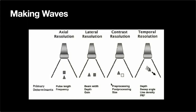To summarize what determines these resolutions: axial resolution is governed by pulse length and frequency. Lateral resolution is dictated by the beam width — fixed by the size of the transducer and how much the phased array can look around — as well as depth and gain. There are also contrast and temporal resolution aspects, which are also important.